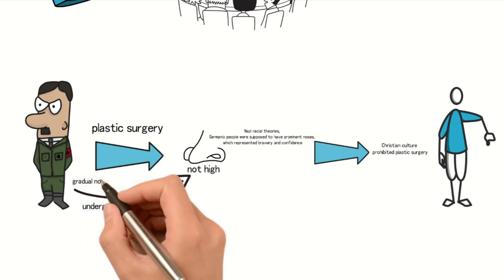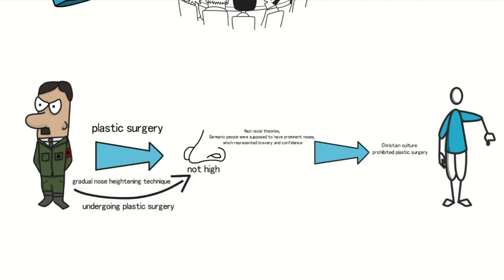To counter this, Hitler devised the gradual nose-heightening technique. He underwent multiple surgeries to gradually raise his nose, keeping the changes subtle enough so the public wouldn't notice until his nose had become higher.